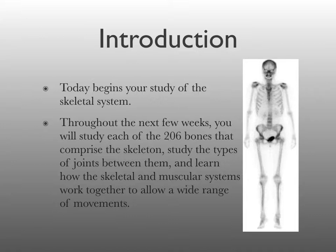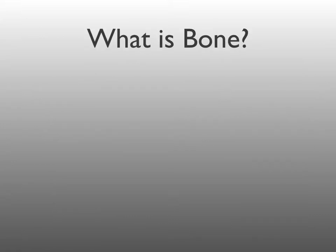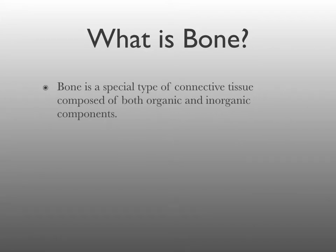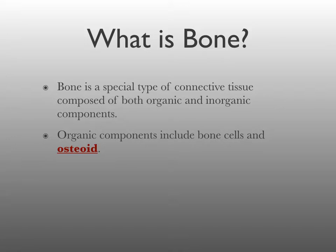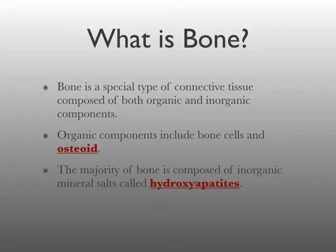Let's begin by first defining bone. You should remember from your unit on histology that bone is a special type of connective tissue, and it's composed of both organic and inorganic components. The organic components of bone include bone cells and osteoid. Osteoid is the organic part of the extracellular matrix. The majority of bone, however, is composed of inorganic mineral salts called hydroxyapatites, which give bone its characteristic hardness. An example of a hydroxyapatite found in bone is calcium phosphate.